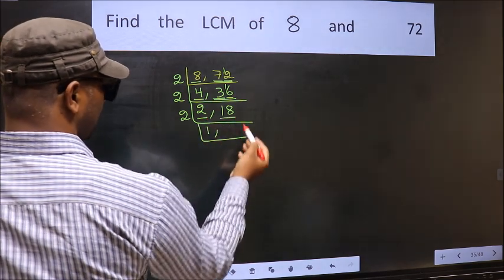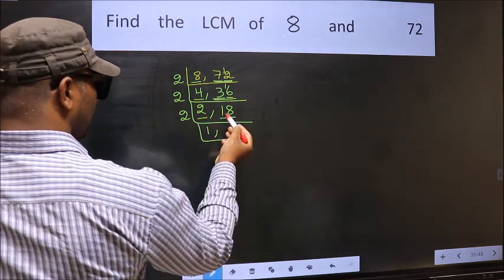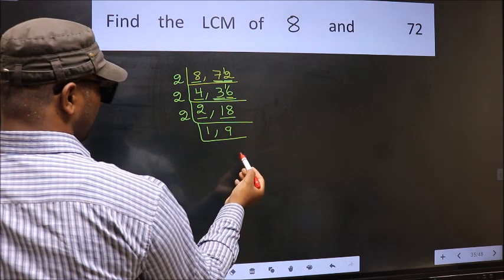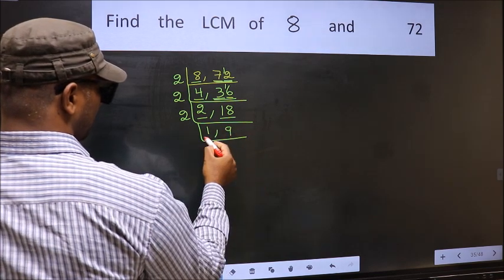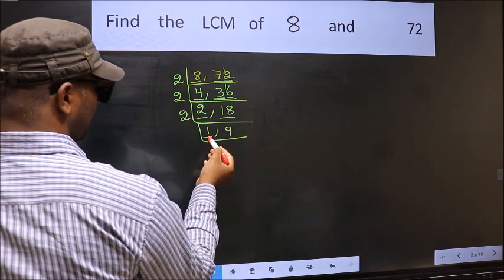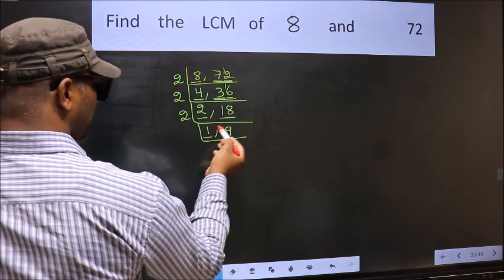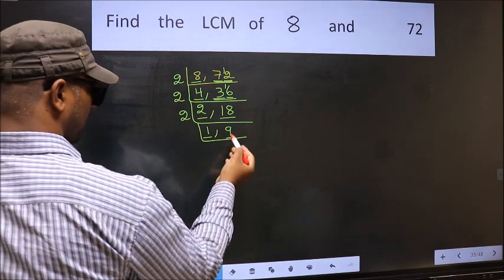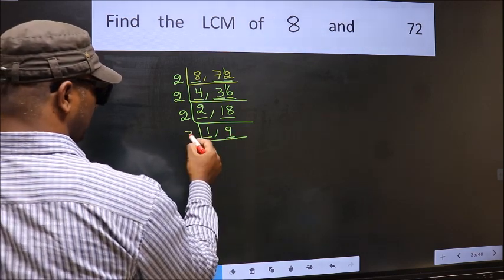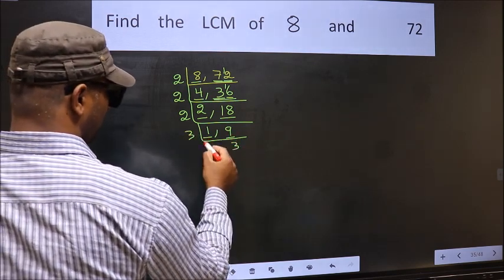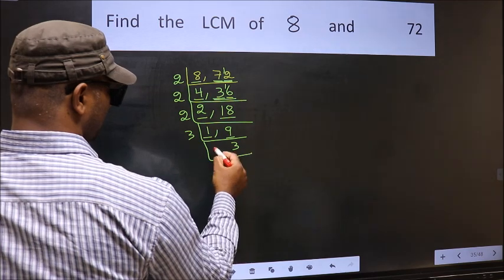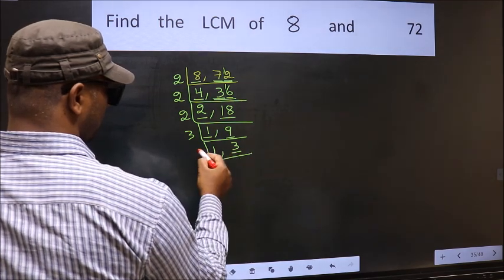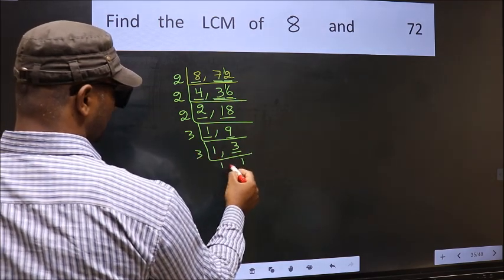The other number 18. When do we get 18 in the 2 table? 2 times 9 is 18. Now we got 1 here, so focus on the other number 9. 9 is 3 times 3. Now we have 3 — 3 is a prime number, so 3 times 1 is 3.